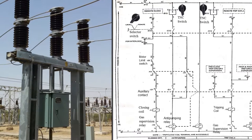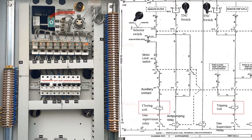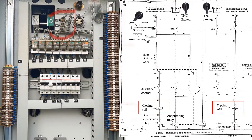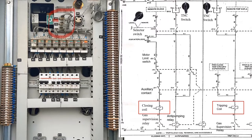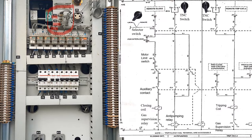First we will see the overview of a circuit breaker by side by side comparison with its wiring diagram where Y1 is the closing coil, Y2 and Y3 are the tripping coils as shown here.